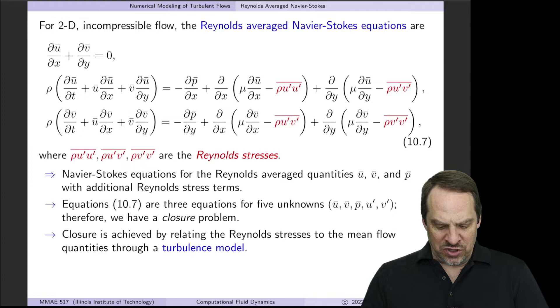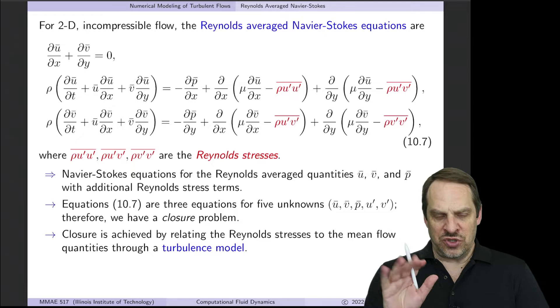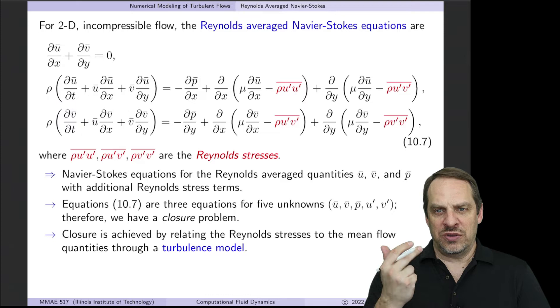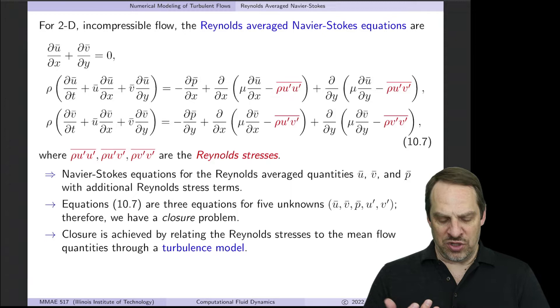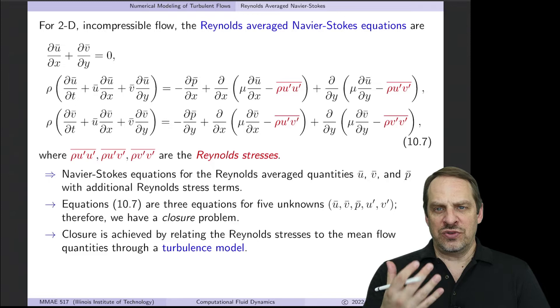We would solve these equations for the mean flow, but we have a closure problem. We actually have five unknowns: U-bar, V-bar, P-bar, the mean flow variables, as well as U-prime and V-prime, the fluctuating variables. So we have five dependent variables but only three equations. Therefore, we do not have a closed system. That is the closure problem.